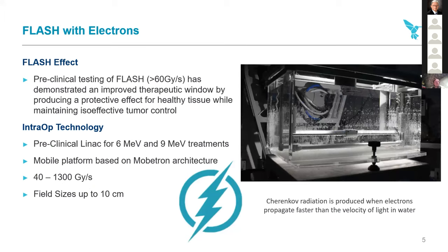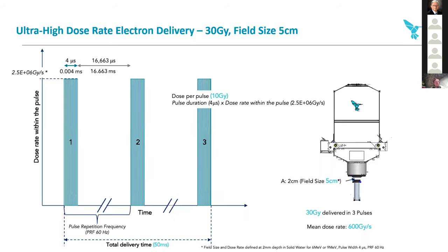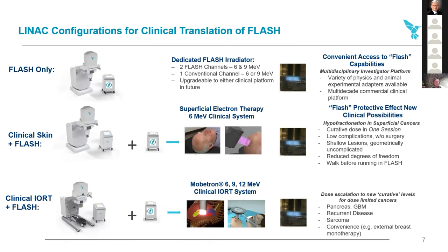Our system offers six and nine MEV treatments with FLASH on a mobile platform, at dose rates up to 1,300 grays per second, as low as 40 grays per second, and field sizes up to 10 centimeters. There's a video demonstrating the system operating in flash mode. The beam structure is a typical linac beam structure — this example shows a four-microsecond pulse with 10 grays in the pulse, so a 30-gray delivery with three pulses. This is a very typical electron linac fine beam structure.